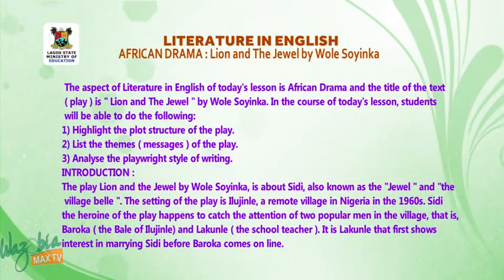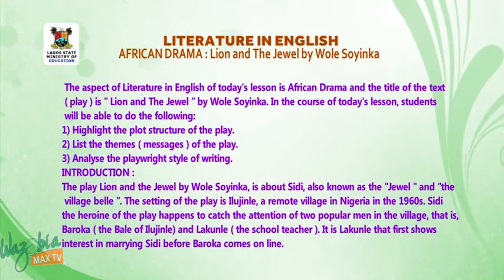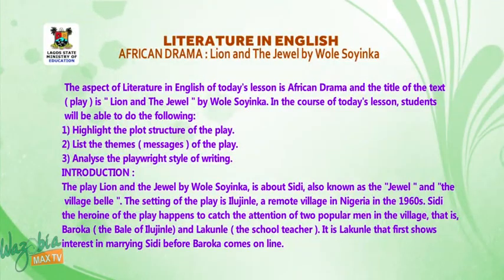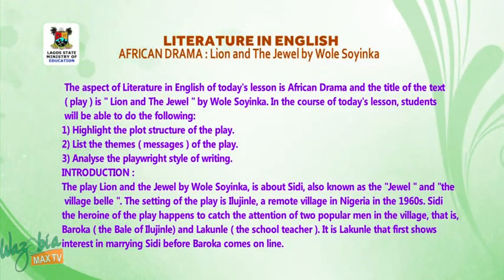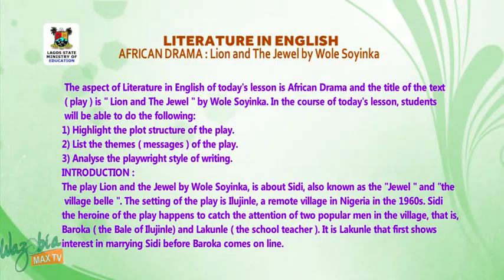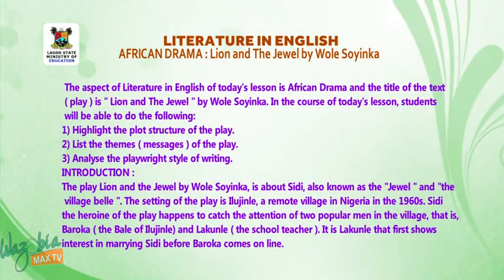Introduction: the play Lion and a Jewel by Wole Soyinka is about Sidi, also known as the Jewel and the village belle. The setting of the play is Ilujinle, a remote village in Nigeria in the 1960s. Sidi, the heroine of the play, catches the attention of two popular men: Baroka, the bale of Ilujinle, and Lakunle, the schoolteacher. It is Lakunle who first shows his interest in marrying Sidi before Baroka comes on the scene.